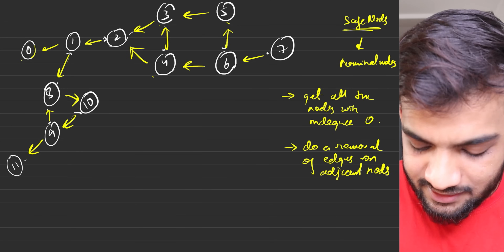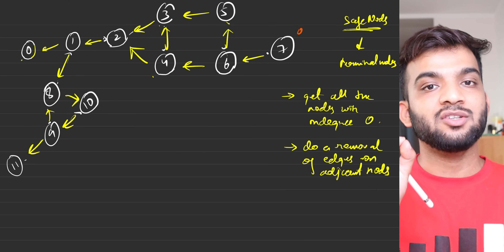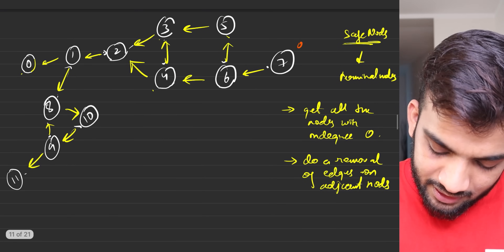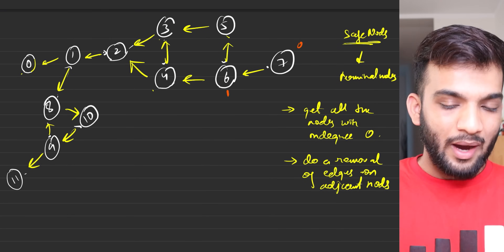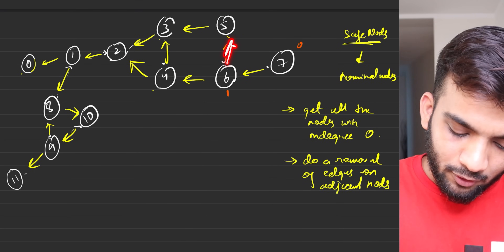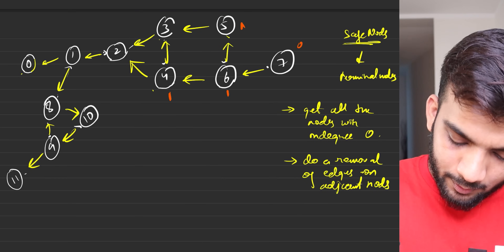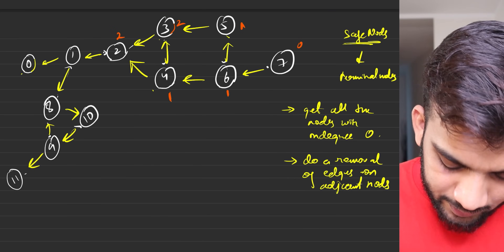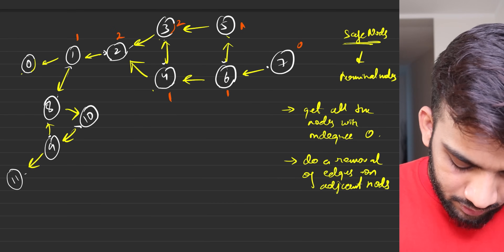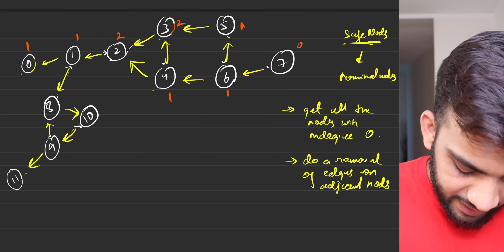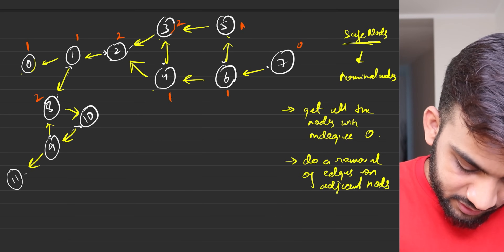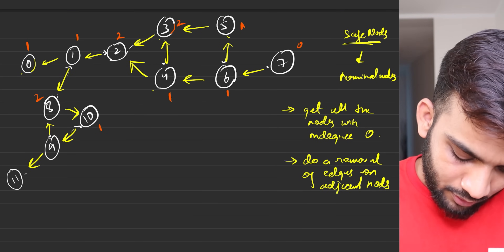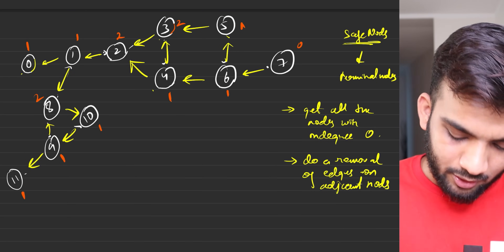Now let's compute in-degrees on the reversed graph. Node seven has in-degree zero. Nodes like five, four, one, eight, ten, nine, eleven each have in-degree one. Nodes three and two each have in-degree two. Node zero has in-degree one. Node eight has in-degree two due to two incoming edges.